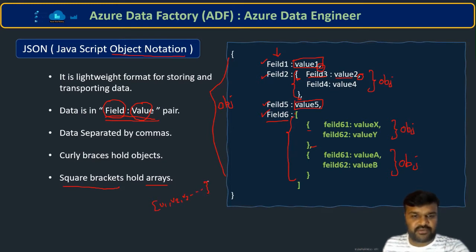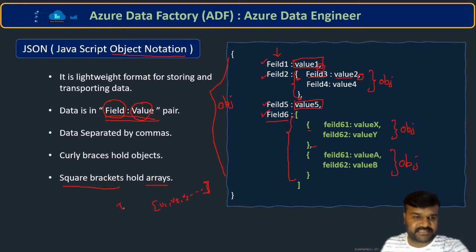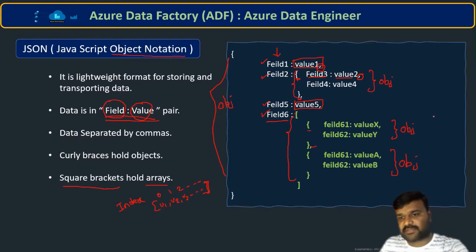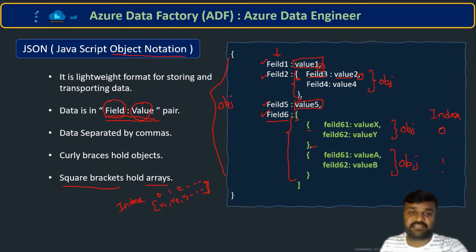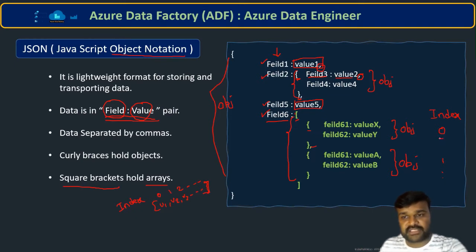Because it is an array, just like values at index 0, 1, 2, you identify elements uniquely with indexes. The first object becomes index 0, the next becomes index 1, and so on — however many objects you have inside the array, they get corresponding index numbers starting from 0. Whenever you want to fetch any value from a particular object, you must identify that object with its index number.